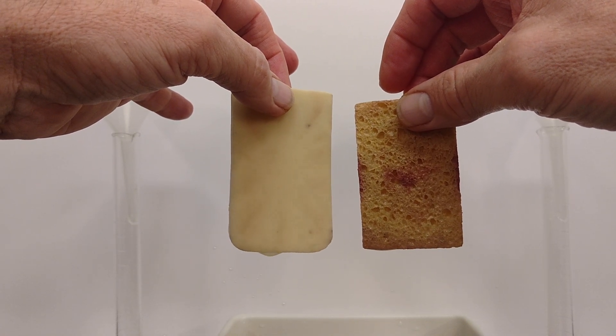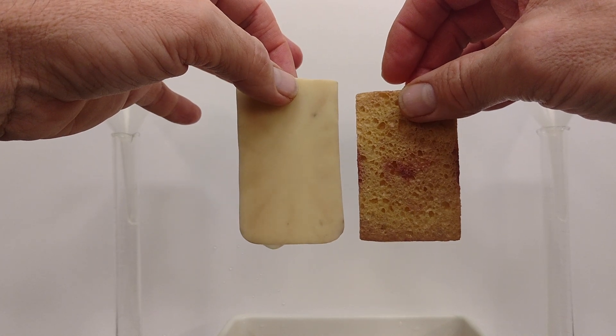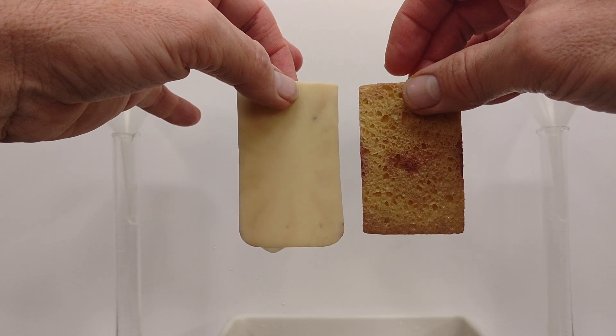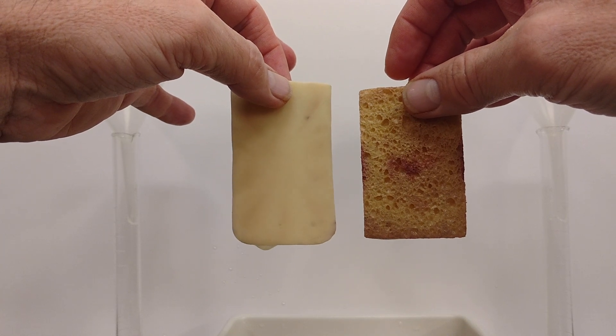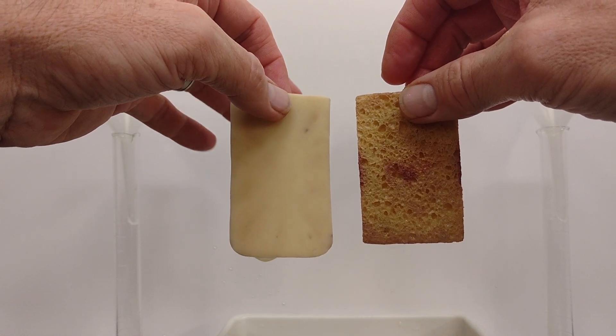In this case we're going to observe which of these sponges—the one with the large pores in my right hand, or the one with the small pores in my left—holds the most water.